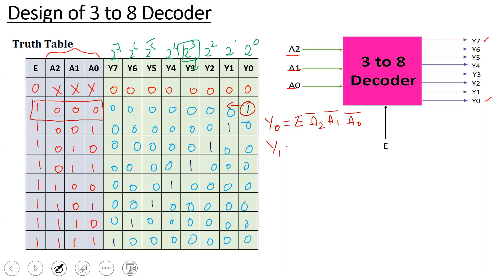For Y1, the 1 appears where the input combination is E=1, A2=0, A1=0, A0=1. So Y1 = E · A2_bar · A1_bar · A0. For Y2, the combination is E=1, A2=0, A1=1, A0=0. So Y2 = E · A2_bar · A1 · A0_bar.